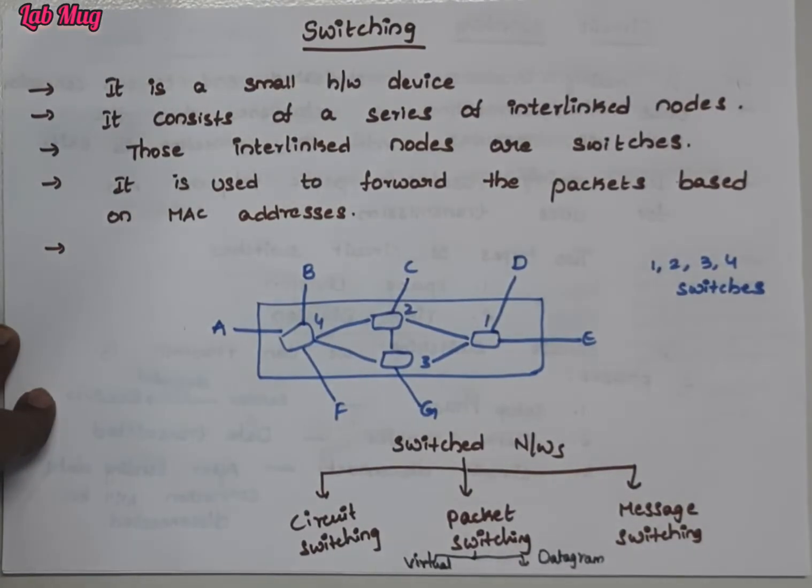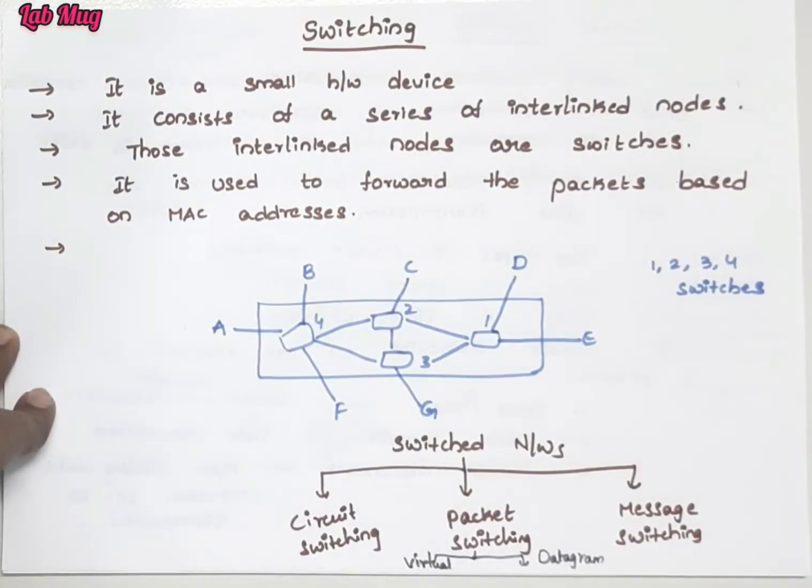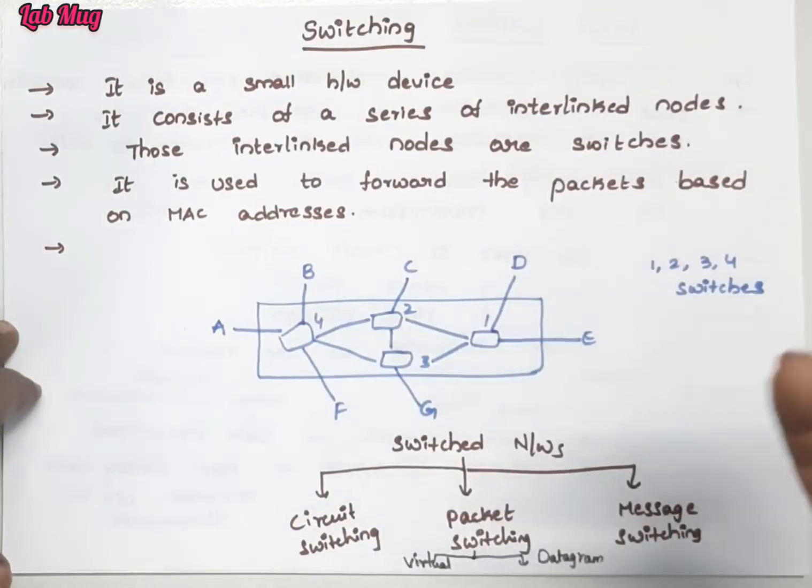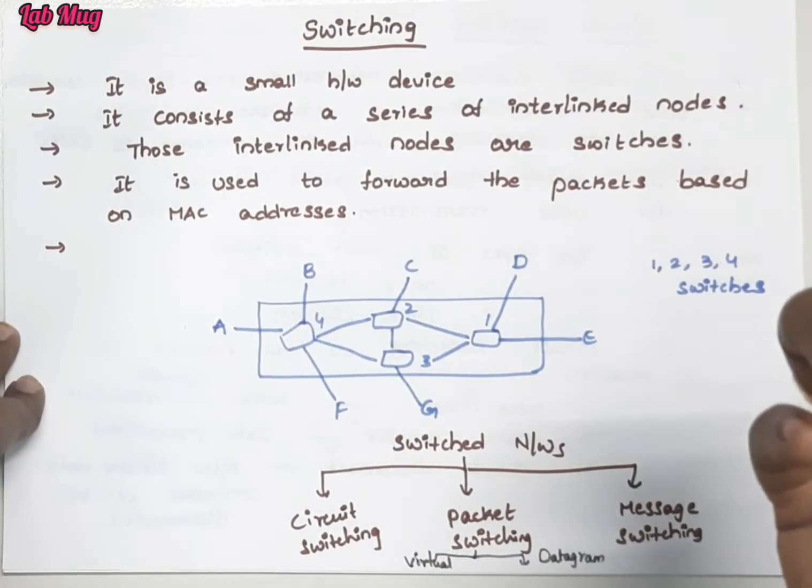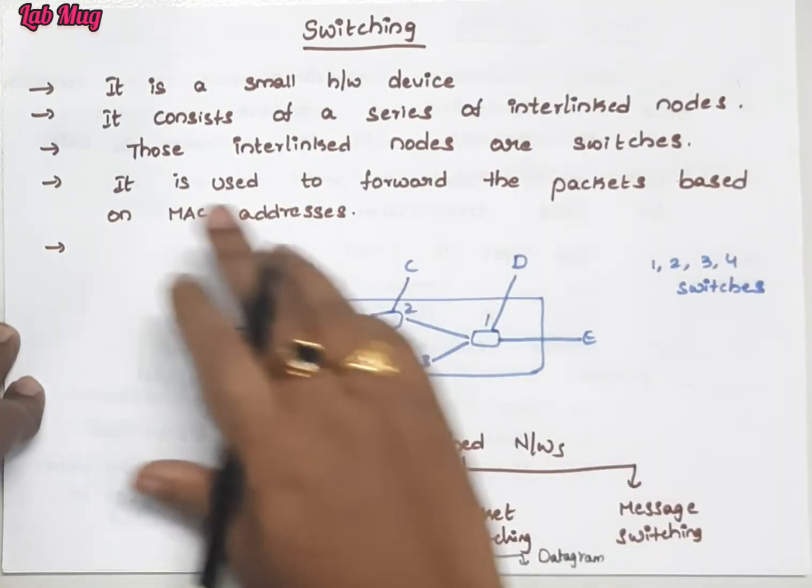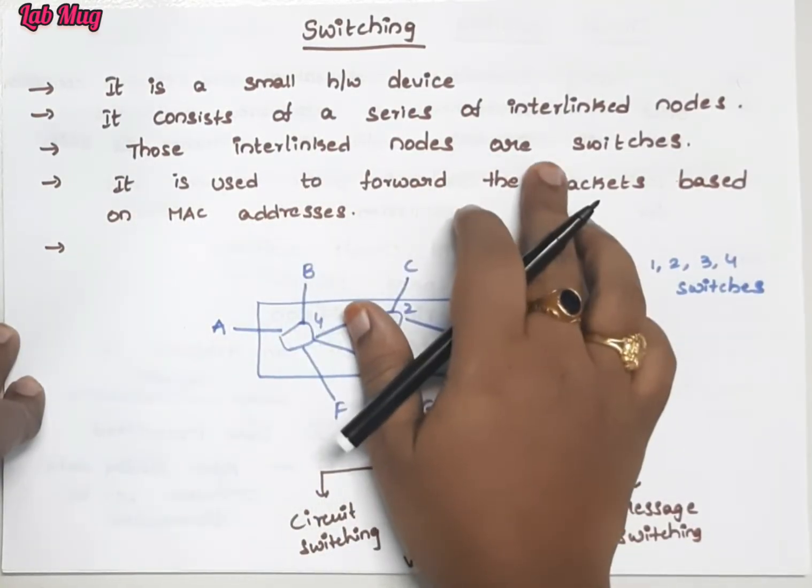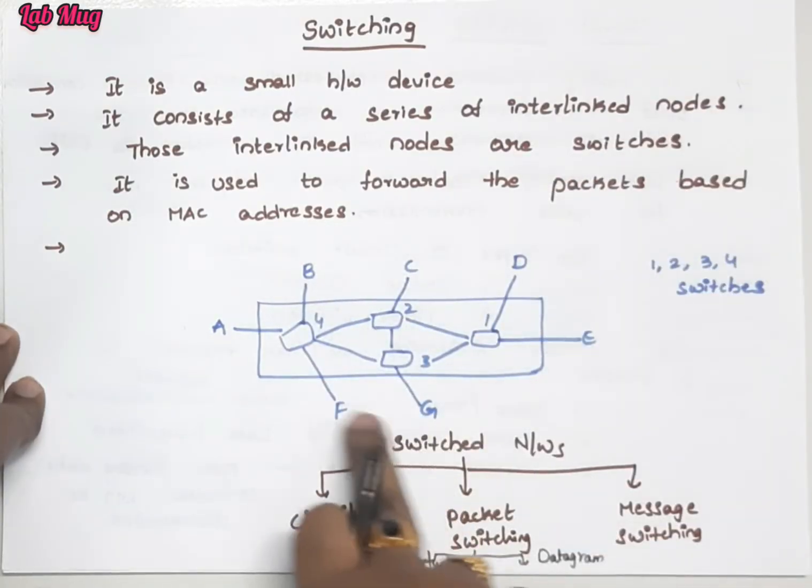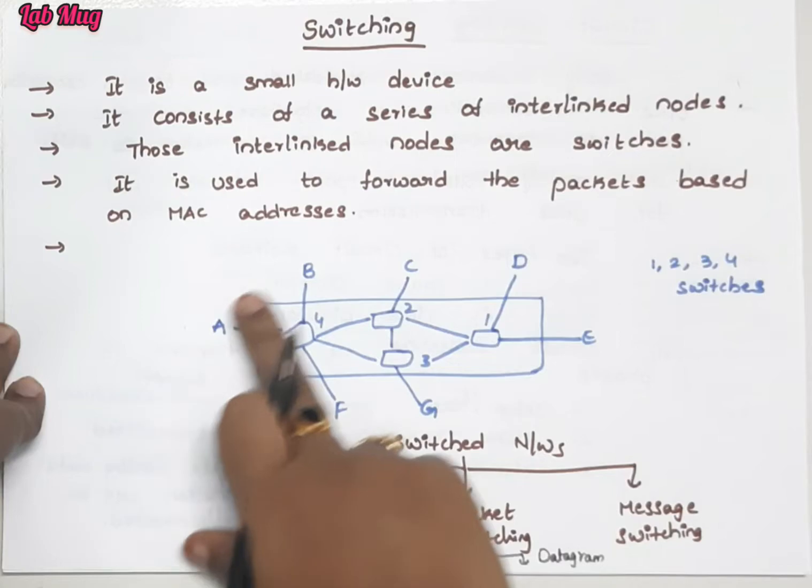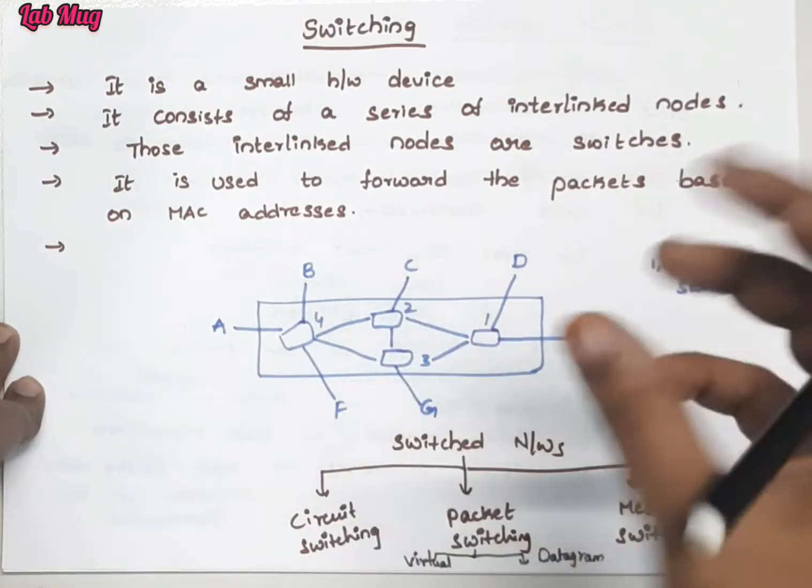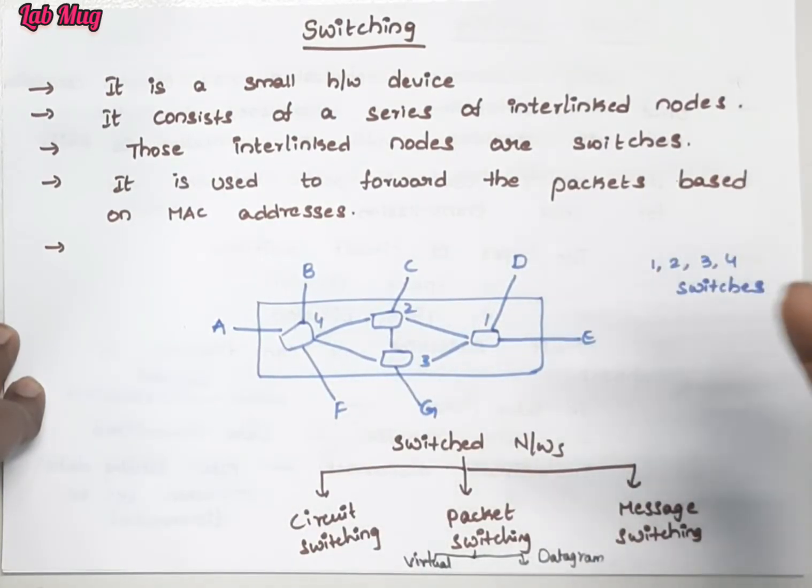These interlinked nodes are switches. Through switching we establish connections between them. In multiplexing, those interlinked nodes are switches in the network. The network has A, B, C, D, E, F, G - four different types of devices or different types of networks.